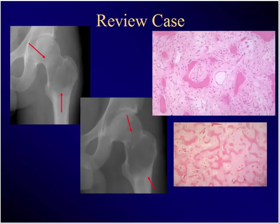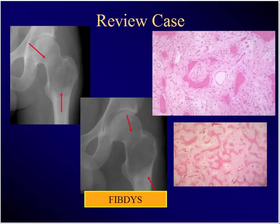This one here — proximal femoral lesion, pain with weight-bearing activities. Here's the histopath. What's the diagnosis? Fibrous dysplasia.